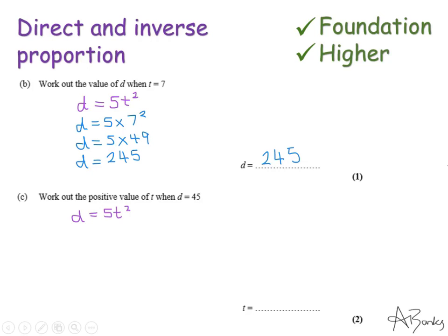The second one is slightly harder. So it says, work out the positive value of t when d is 45. So I'm going to substitute in again. This time they're telling me d is 45. Now I've got to work out what t is. So I've just got like an equation to solve. So I'm going to divide by 5 first on both sides. So this gives me 9 equals t squared. So t must be the square root of 9, which is 3. The reason they've said work out the positive value of t instead of just work out the value of t is because we know that minus 3 times minus 3 is also 9. So minus 3 is the square root of 9 as well. But they've asked for the positive value. So the answer is 3.